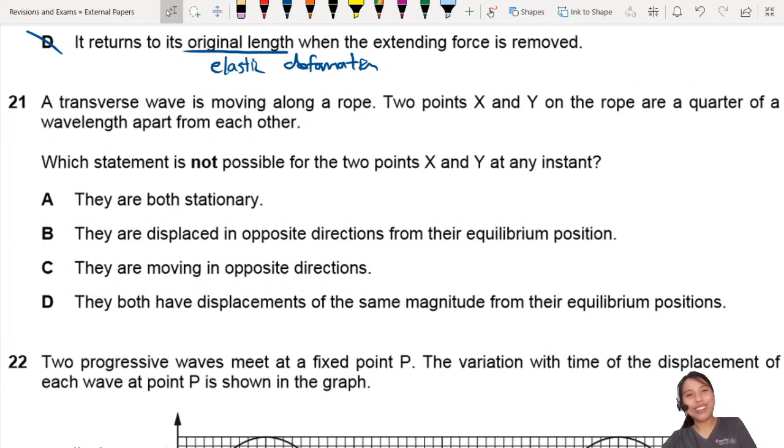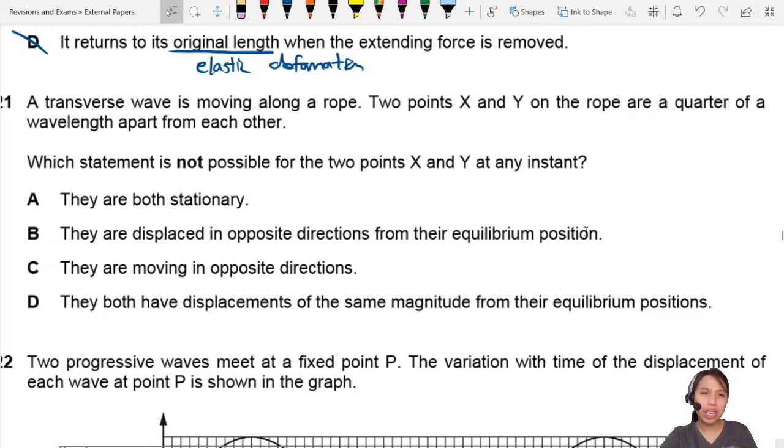Here's a transverse wave, my favorite, moving along a rope. Two points X and Y are a quarter of a wavelength apart from each other.